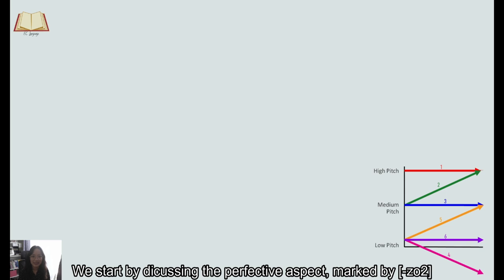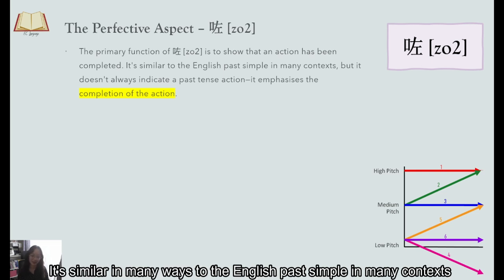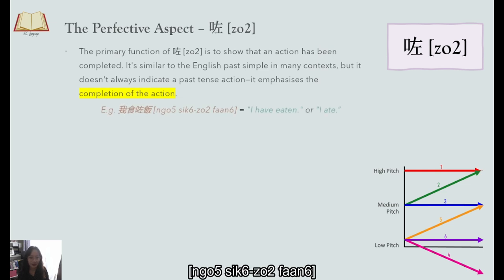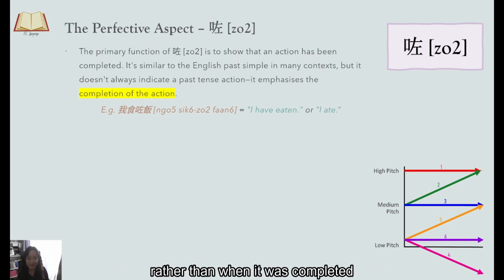So we start by discussing the perfective aspect marked by 左. This aspect focuses on the completion of an action. It's similar in many ways to the English past simple in many contexts but it doesn't always indicate a past tense action. It emphasizes the completion of the action. For example, 我食左饭 can mean I have eaten or I ate but remember this emphasizes the completion of the action rather than when it was completed.